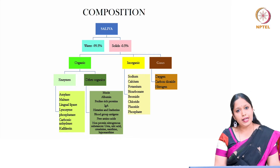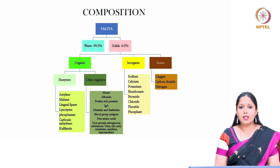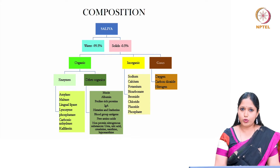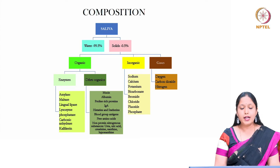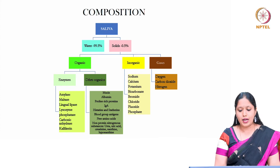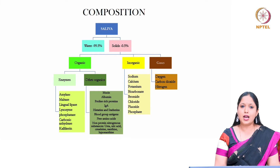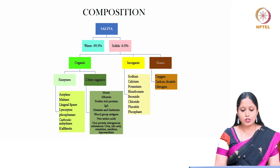Under inorganic components come various ions like sodium, calcium, potassium, bicarbonate, bromide, chloride, fluoride, and phosphate. Under gases come oxygen, carbon dioxide, and nitrogen.